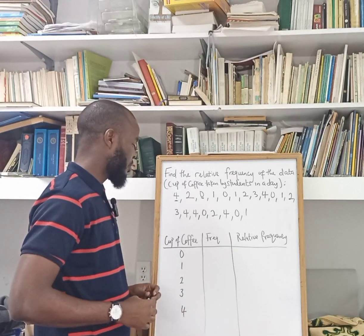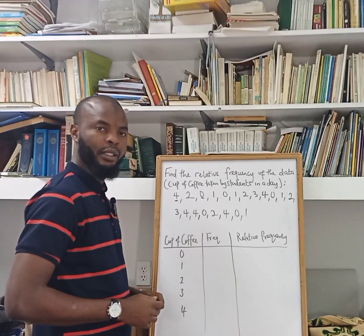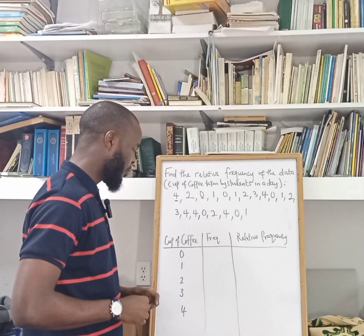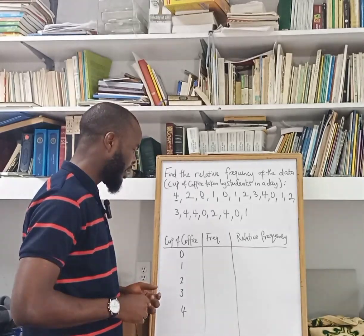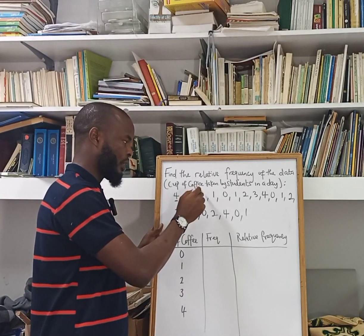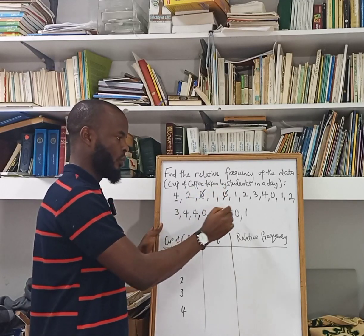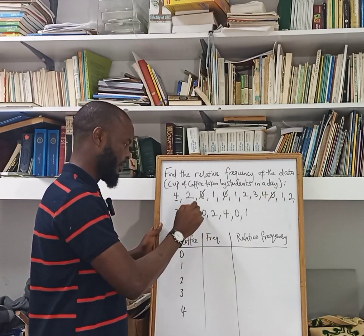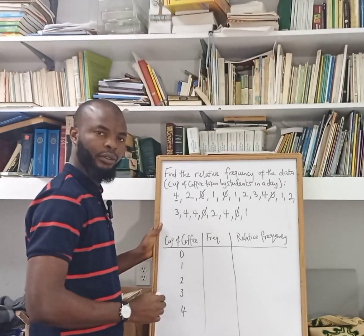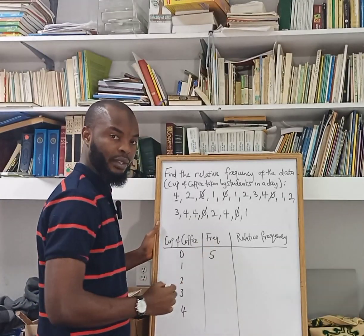Now I am going to work on the frequency, that is the number of occurrences. Working on the frequency, let's see how many zeros we have. Counting together: one, two, three, four, five. So here we are having five zeros.